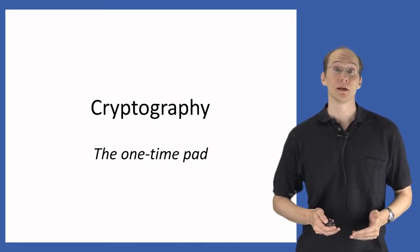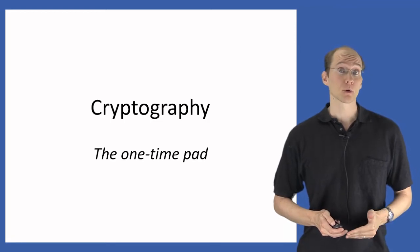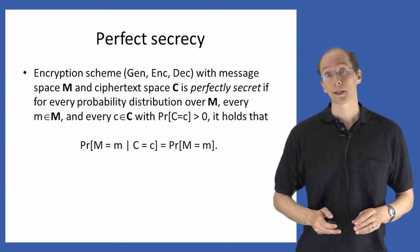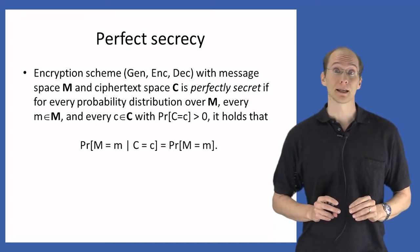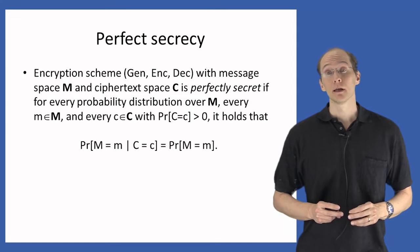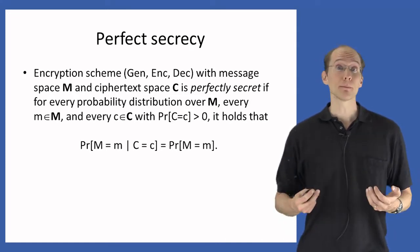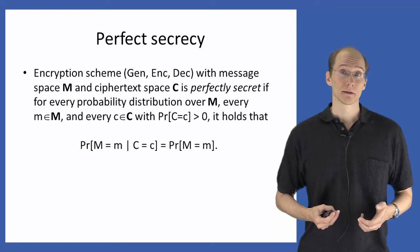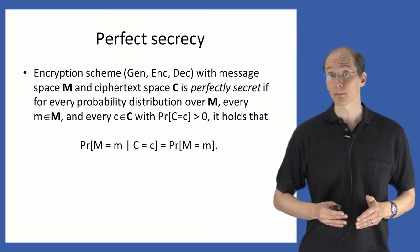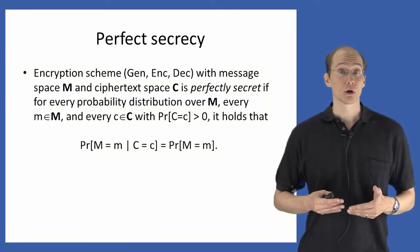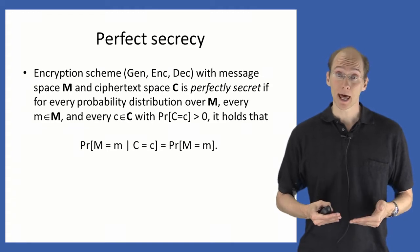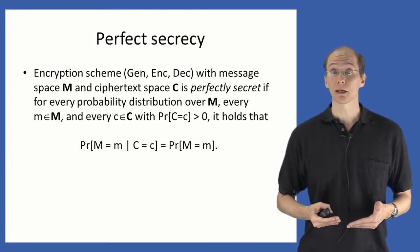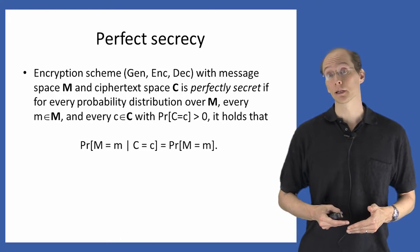In the last lecture, we defined formally the notion of perfect secrecy. In this lecture, we'll see a construction that achieves that definition. Just to remind you of our definition: an encryption scheme defined by the three algorithms gen, enc, and dec, with message space M, is perfectly secret if for every possible probability distribution over the message space, any message, and any ciphertext, the a posteriori probability that the message equals M conditioned on the observed ciphertext equals C is exactly equal to the a priori probability that the message equals M.